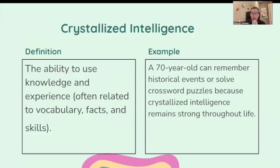Crystallized intelligence: the ability to use knowledge and experience, often related to vocabulary, facts, and skills. For example, a 70-year-old can remember historical events or solve crossword puzzles because crystallized intelligence remains strong throughout their life.